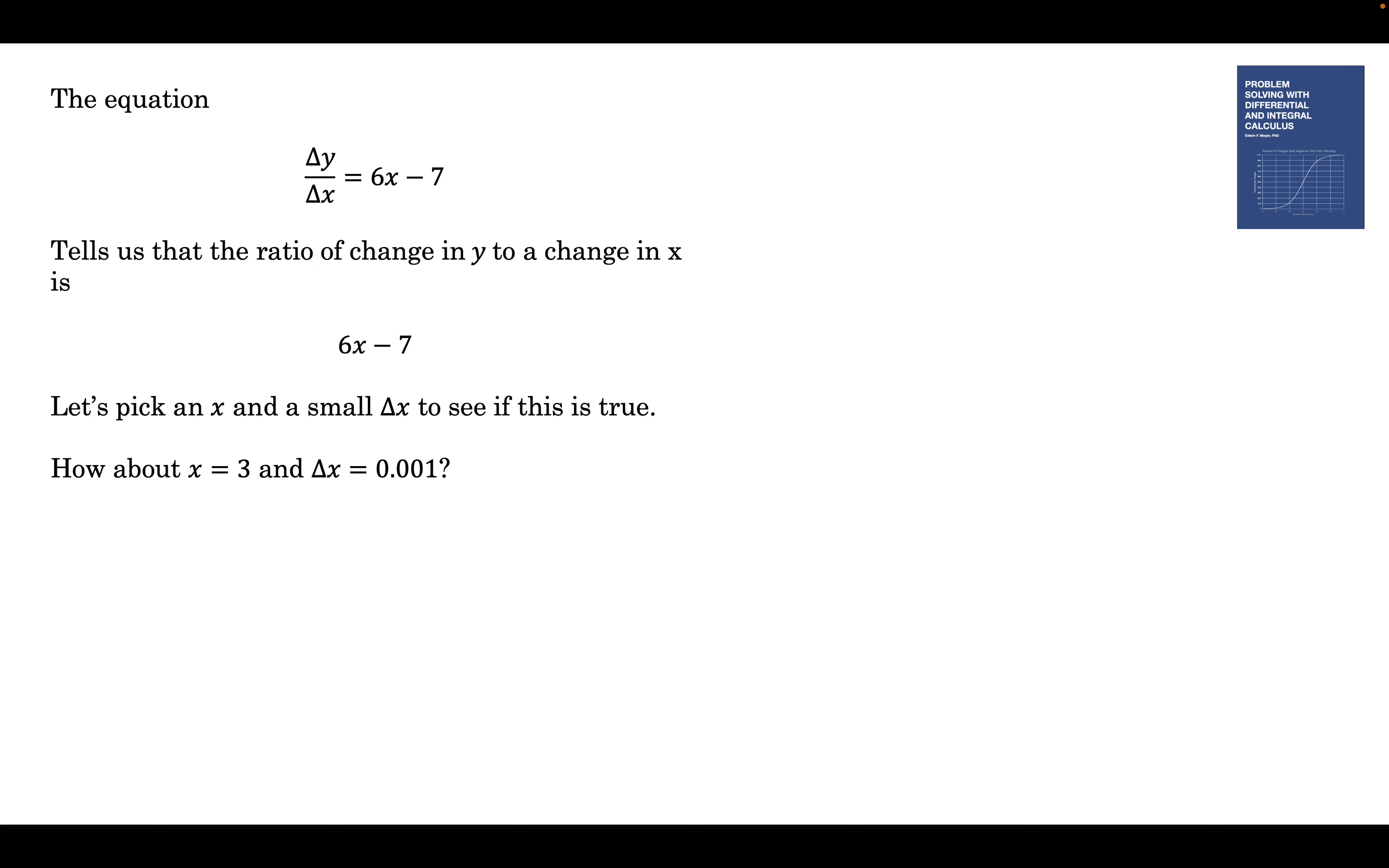Because we dropped that Δx squared term. So x equals 3, Δx is 0.001. So now we're going to substitute 3 into the normal equation. If we do that, we get 9 minus 21 plus 4. Oh, not 9. 27. Minus 21. That's 6. 6 plus 4 is 10. If we stick in 3, we get 10.